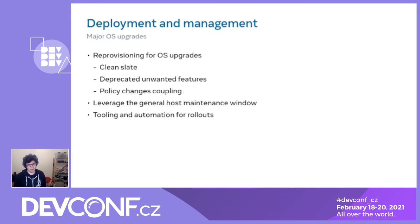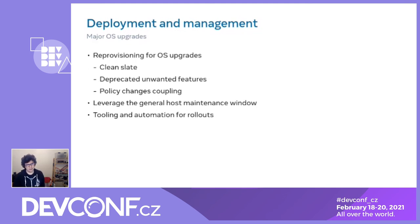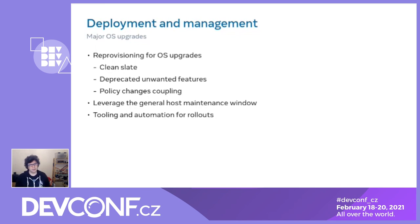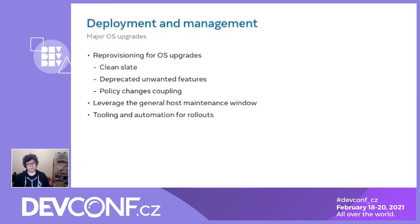For major updates, we simply reprovision. We decided long ago it's not worth the trouble to do major updates in place, even if it's technically possible. We also like getting a clean slate and a watershed event we can use to make policy changes. For example, when we did CentOS 7 to 8 we enabled Btrfs by default, which requires wiping the drives — since you're reimaging anyway, you might as well do these things. We have tooling that knows how many machines you can take out at the same time without impacting user services, and we do this safely.